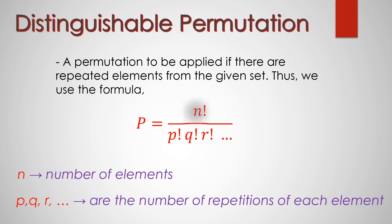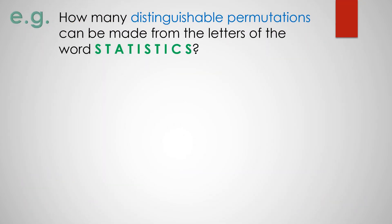For example, how many distinguishable permutations can be made from the letters of the word 'statistics'? Even if there is no statement saying that this is a distinguishable permutation, we will automatically consider this problem under distinguishable permutation, because upon looking at the elements from the given set, we do have repeated elements — we do have like elements. So therefore, this really falls under distinguishable permutations, and we use this formula.